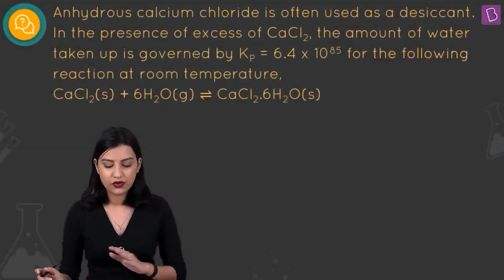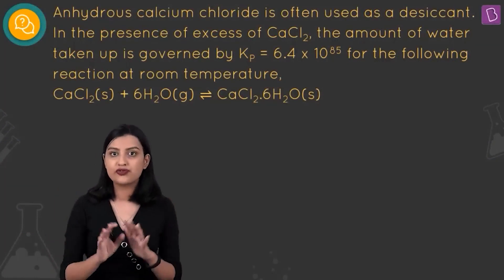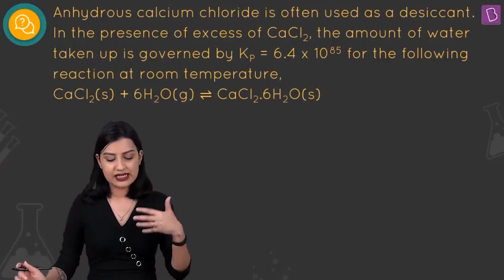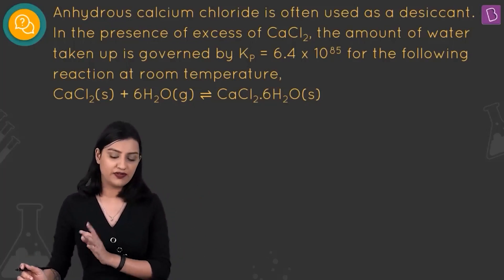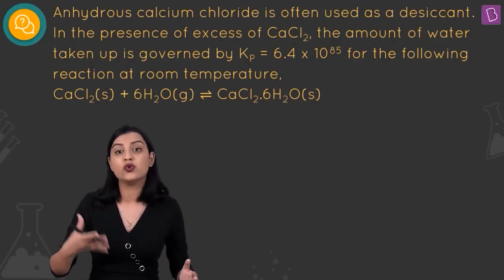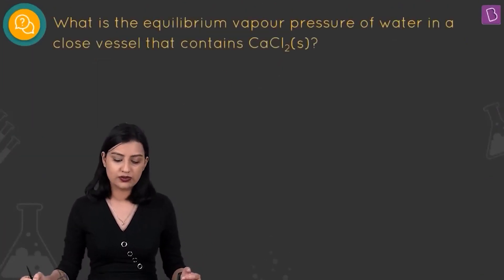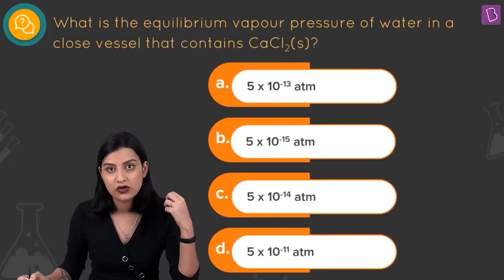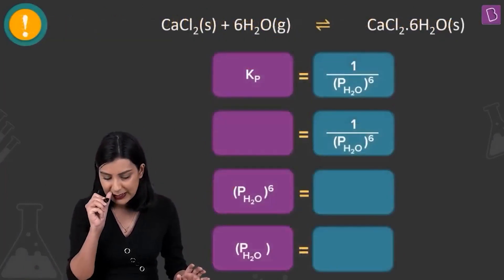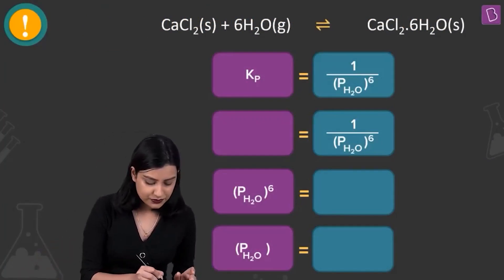Here they're saying anhydrous calcium chloride is often used as a desiccant — a material used to remove traces of moisture. In the presence of excess calcium chloride, the amount of water taken up is governed by Kp = 6.4×10⁸⁵ for the reaction CaCl₂ + 6H₂O ⇌ CaCl₂·6H₂O. They're asking for the equilibrium vapor pressure of water in a closed vessel containing solid calcium chloride.